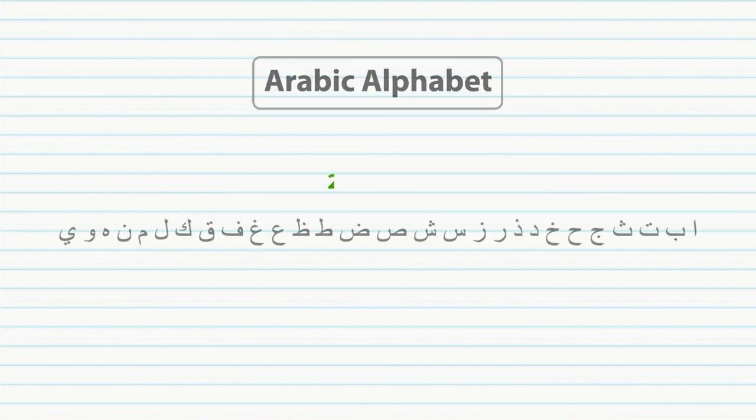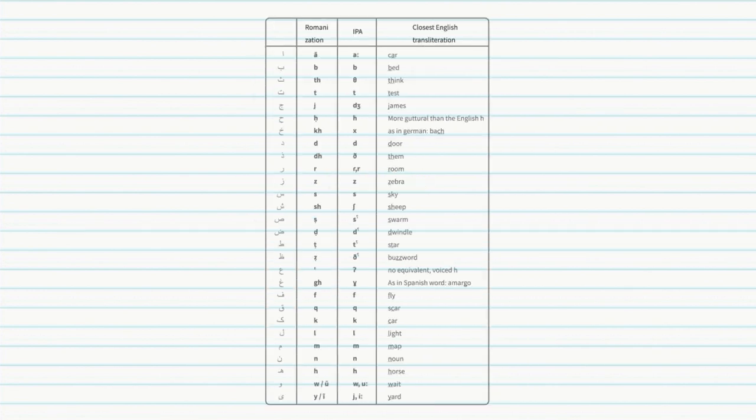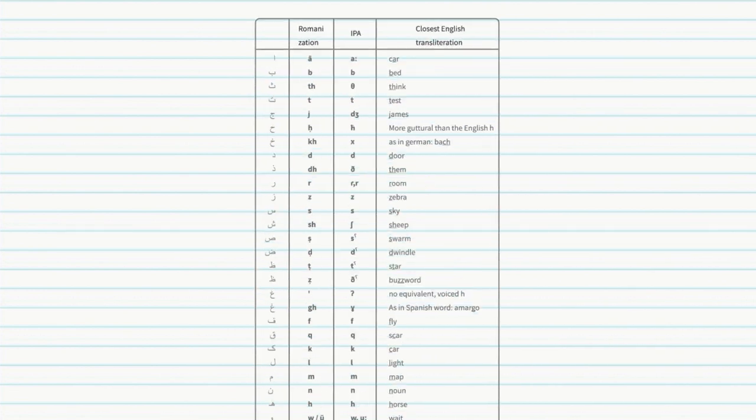The standard Arabic alphabet has 28 letters. All Arabic-based scripts start from right to left. Many letters of the Arabic alphabet have an English equivalent sound, but there are also a few letters that don't have an equivalent sound in English.